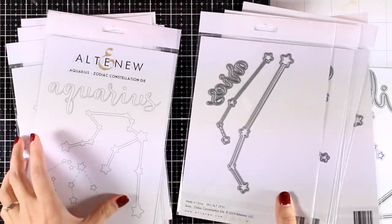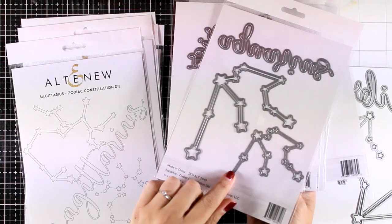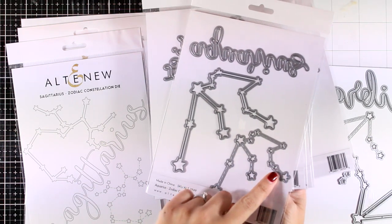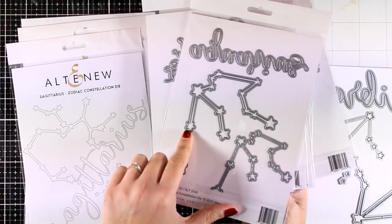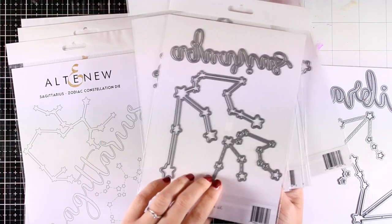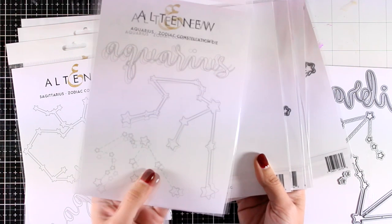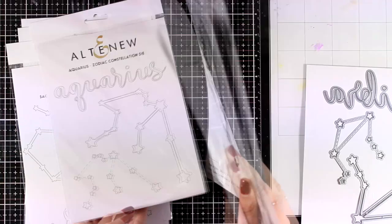They now have the zodiac constellation collection and you can pick your own sign or the sign of your recipient. I like that you get the location of the stars in both bigger and smaller dies and also a lovely die that cuts out the word of your zodiac.